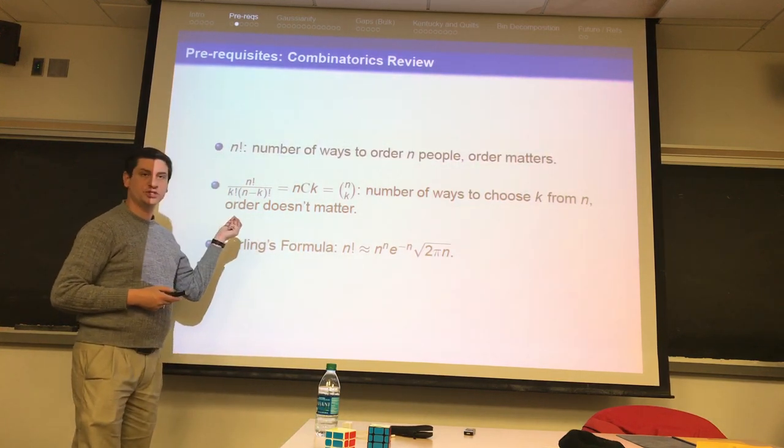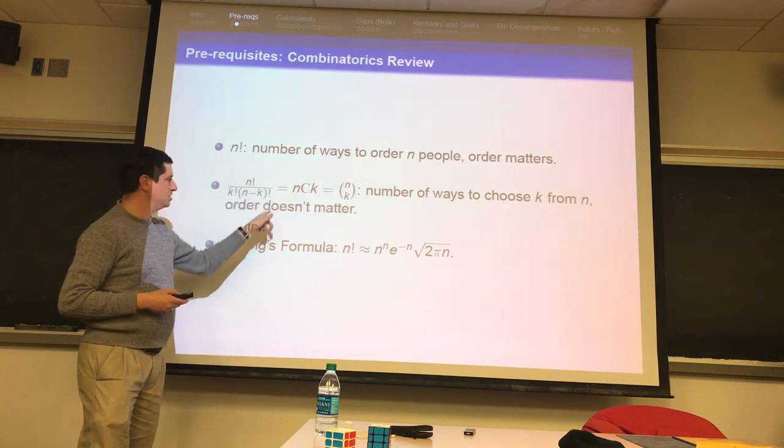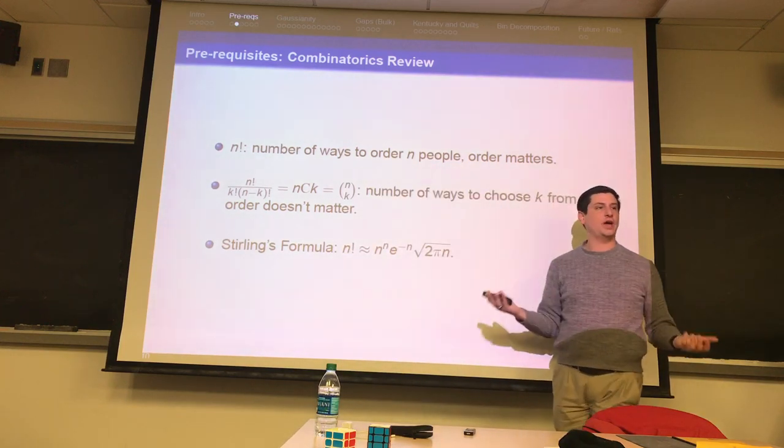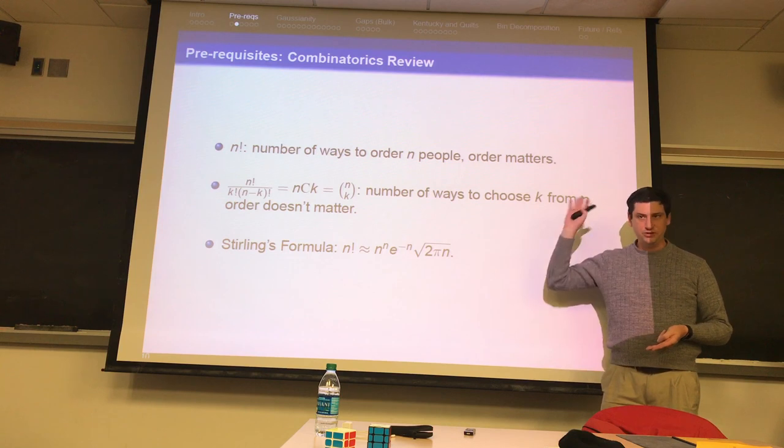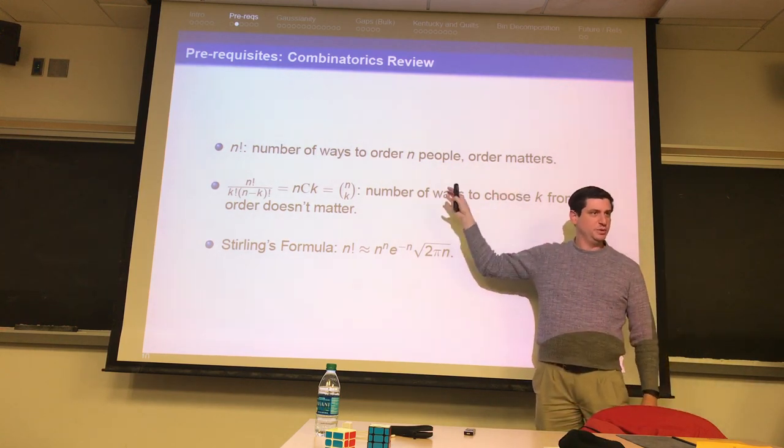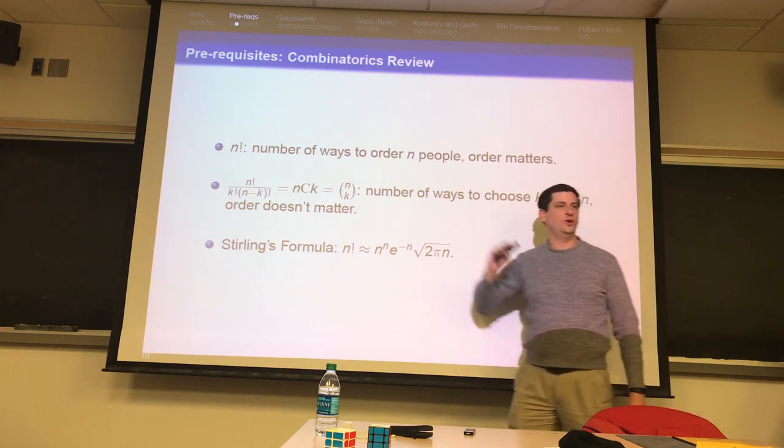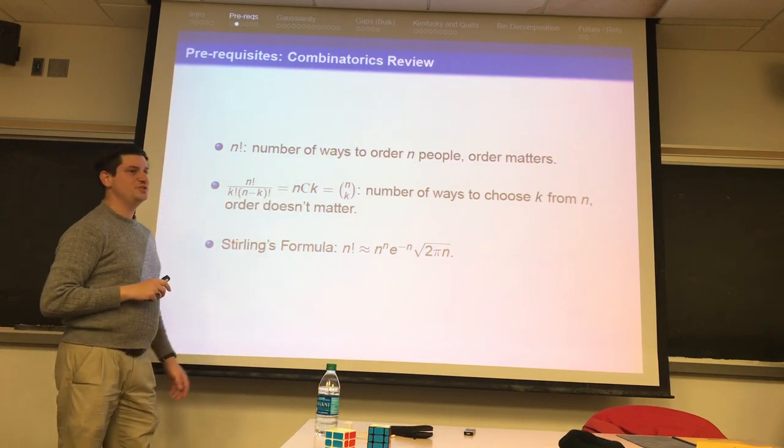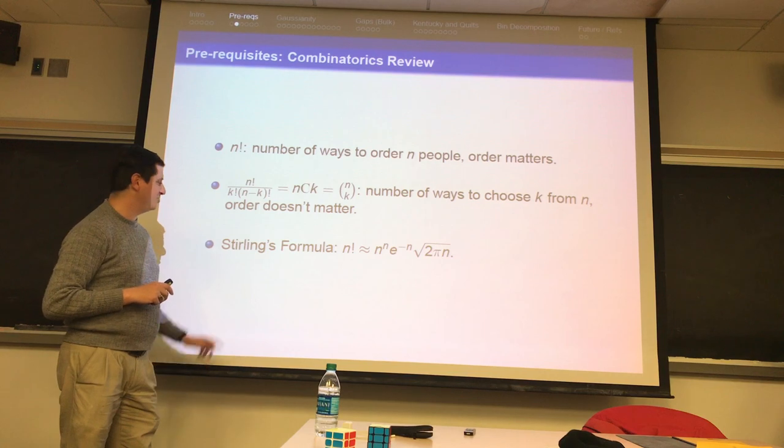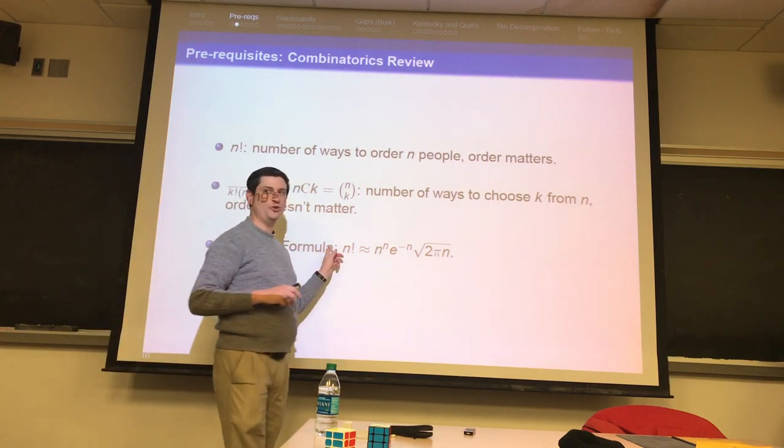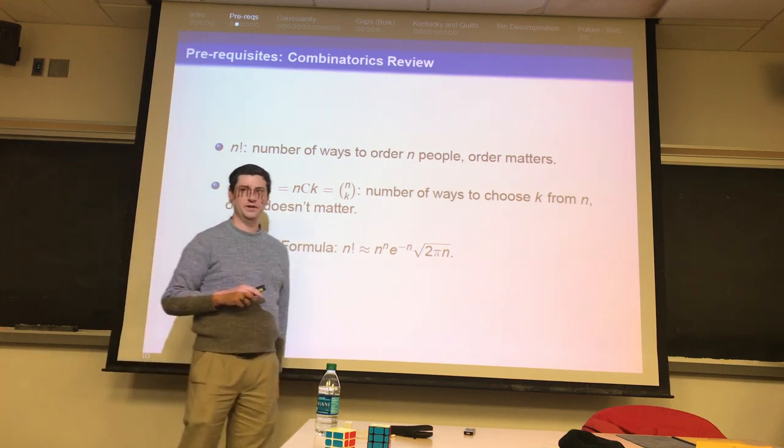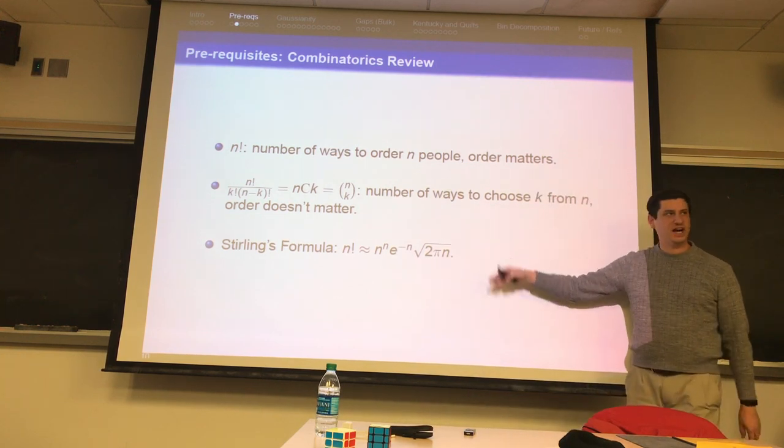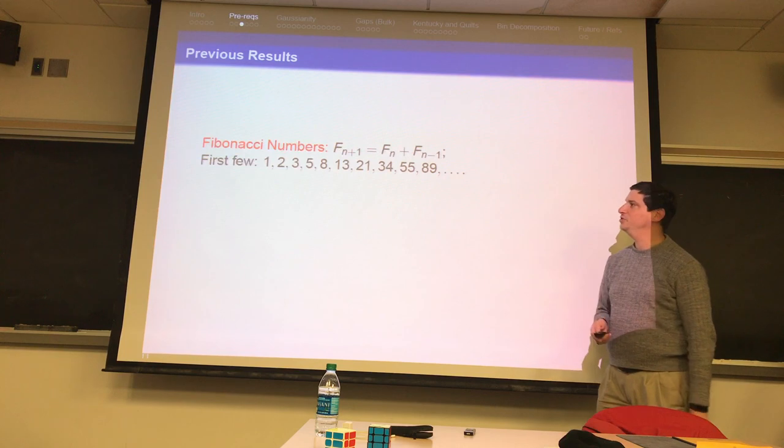N Factorial is the number of ways to order N objects where order matters. N choose k is the number of ways to choose k objects from N when order matters. If I'm lecturing and there's something you haven't seen before, you have two options. Either raise your hand or speak up and say, Professor Miller, could you say a little bit more about that? Or just go, yeah, I can quickly learn that tonight or over the next week. And then the last one which is useful is Sterling's formula. N factorial is approximately N to the N e to the minus N squared of 2 pi N. And this gives you a good sense of how quickly N factorial is growing.